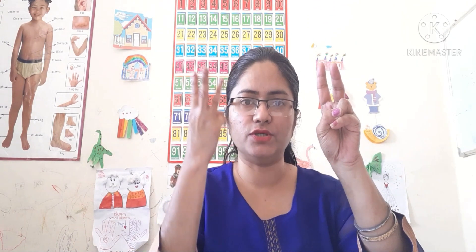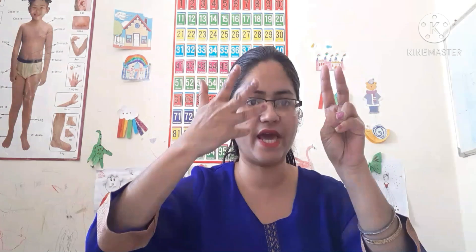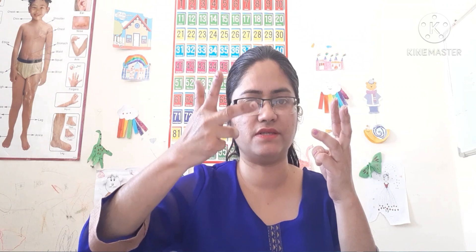Again this is 20, then 21, 22, 23, 24, 25, 26, 27, 28, 29. Again this is number 30, then 31, 32, 33, 34, 35, 36, 37, 38, 39. And 40 — this is 40, 41, 42, 43, 44, 45, 46, 47, 48, 49.